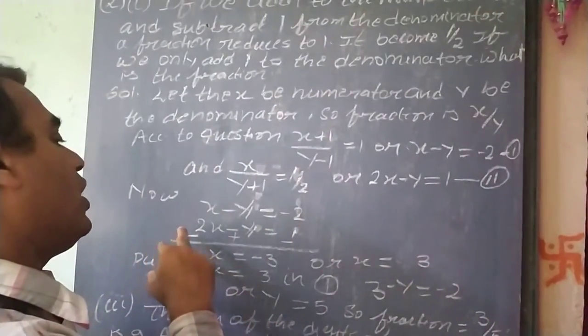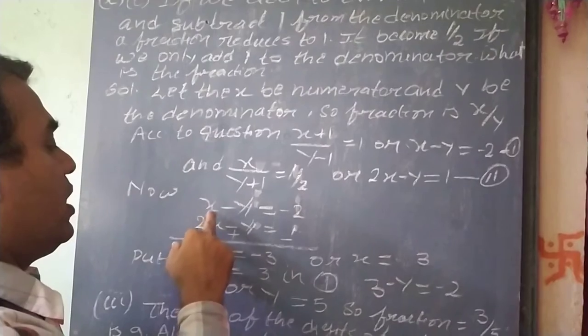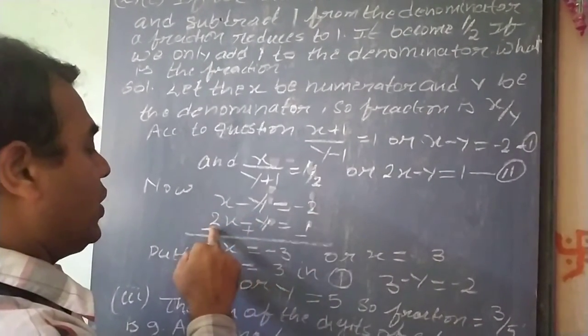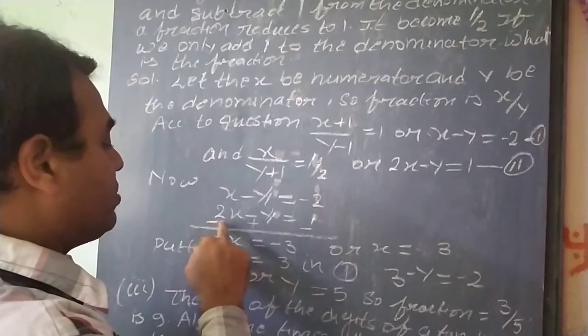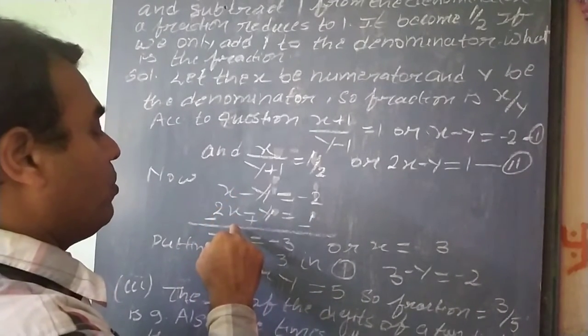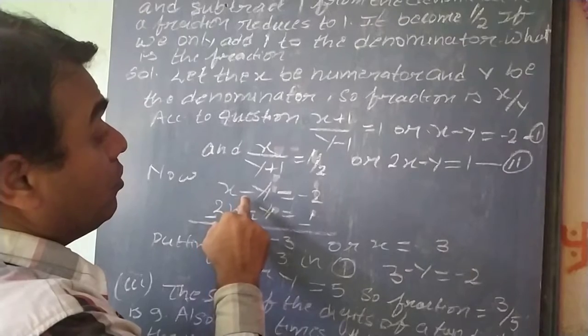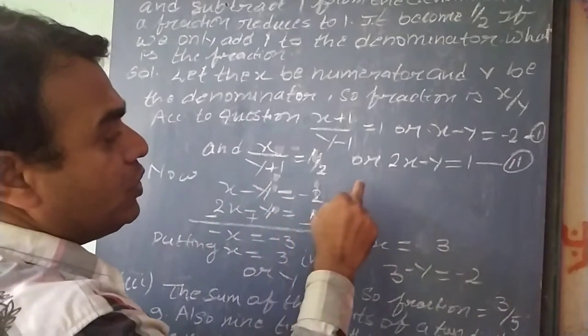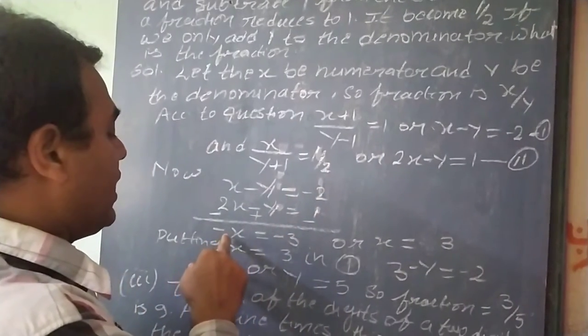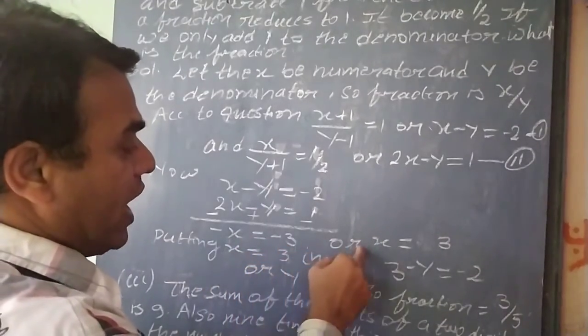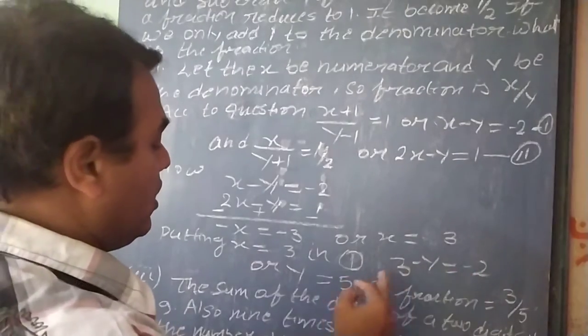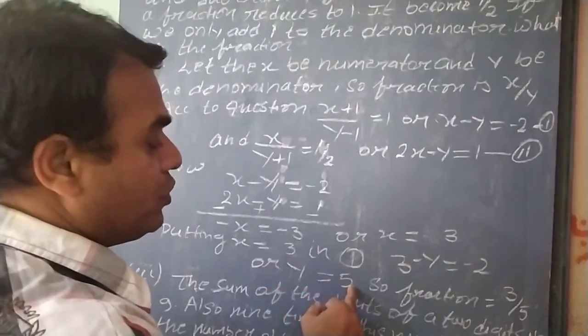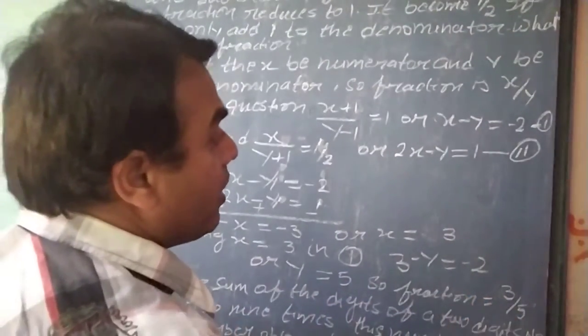After solving the both equations, x minus y equal to minus 2 and 2x minus y equal to 1. Subtracting equation 2 from 1, we get minus x equal to minus 3 or x equal to 3. Putting x equal to 3 in equation 1, we get y equal to 5. So the fraction is 3 by 5.